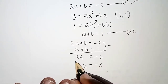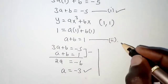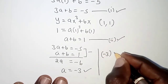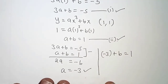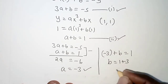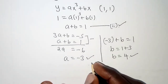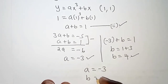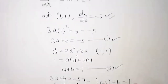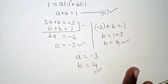Dividing both sides by 2, the value of a is negative 3. Now knowing a, we use the second equation: negative 3 plus b equals 1. Moving negative 3 to the right-hand side gives b equals 1 plus 3, so b equals 4. Therefore, the value of a is negative 3 and the value of b is 4. That is the complete solution to this problem.